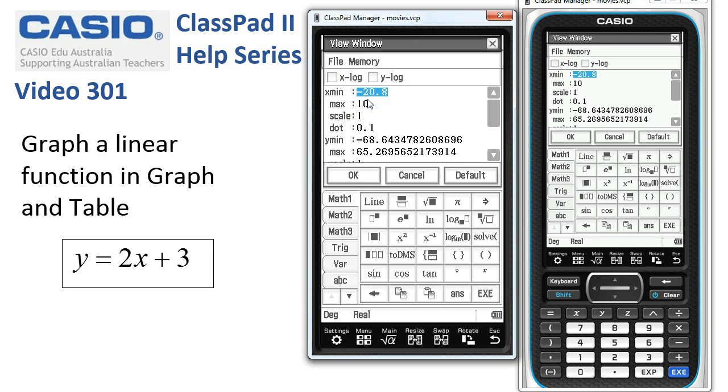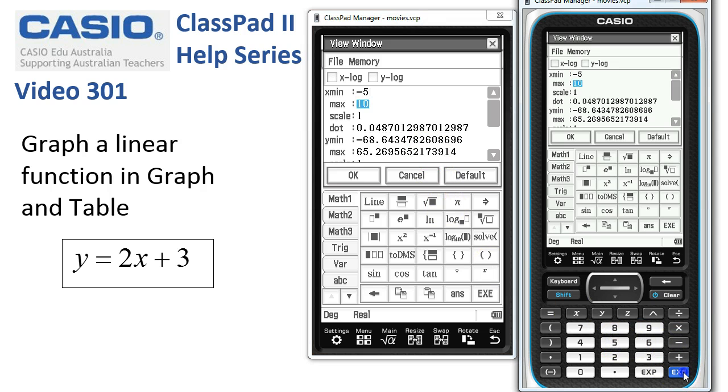X scale from negative five. If I tap execute, the cursor jumps onto x max, which we want to be three. We'll ignore the scale and the dot. The scale is how often it'll put a little tick on the axis. The dot we'll come back to.